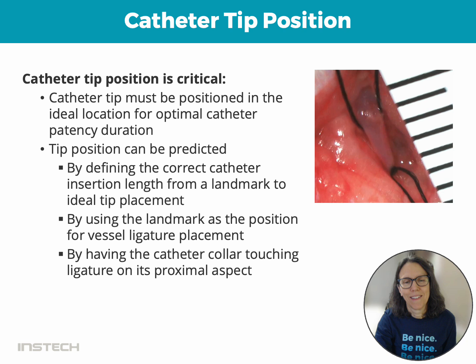You need to use the landmark to position your vessel ligature placement, and then the catheter collar — if it touches that ligature on its proximal aspect, you can predict where that tip is going to be when you do the surgeries.